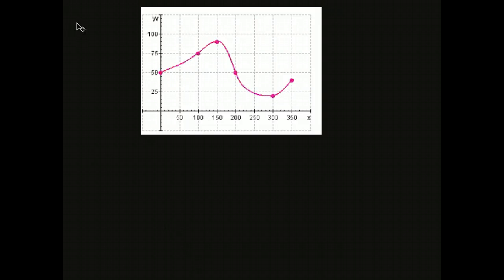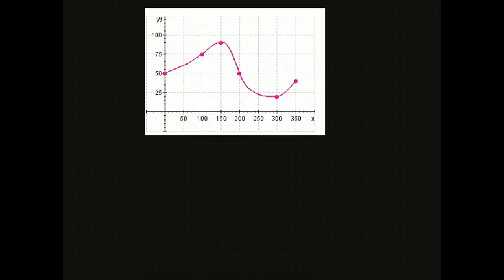Our next example, Example 2, is a graph of the water in a reservoir over a one-year period. X is the number of days since the beginning of the year, and W is the water in the reservoir.